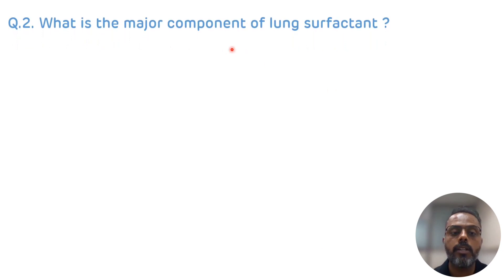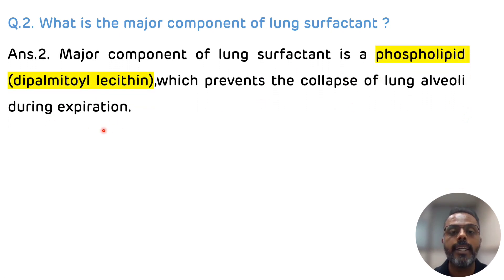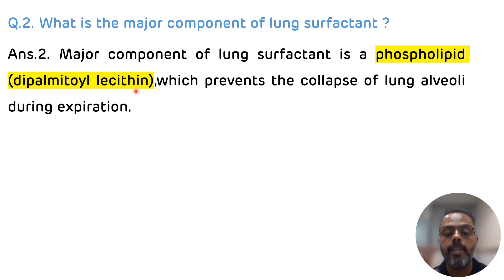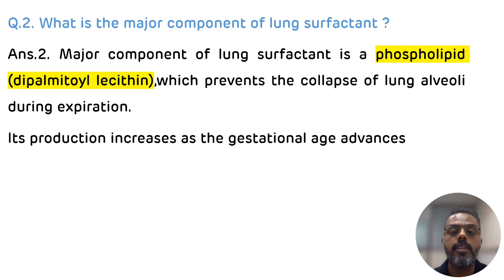The second question is: what is the major component of lung surfactant? The major component is a phospholipid known as dipalmitoyl lecithin, also called dipalmitoyl phosphatidylcholine (DPPC), which prevents collapse of the lung alveoli during expiration. Apart from DPPC, lung surfactant also contains cholesterol, dipalmitoyl glycerol, and surfactant proteins A, B, and C. Lung surfactant is produced by type 2 alveolar cells, with production starting after the 28th week of gestation and increasing as gestational age advances.